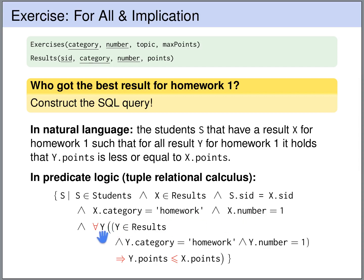And then we express this for all quantification, so we want that for all y, if y is a result for homework 1, then the number of points of y must be smaller or equal than the number of points of x.